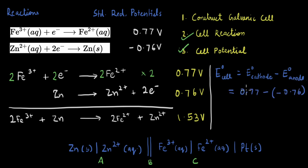So in this case, it will be equal to 0.77, which is the cathode minus the minus 0.76, which is at the anode. And notice how when we use this method, the sign change that we saw here is taken care of in this formula itself.